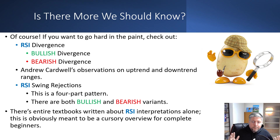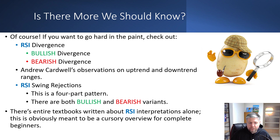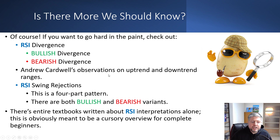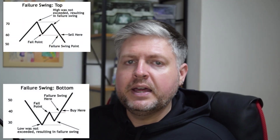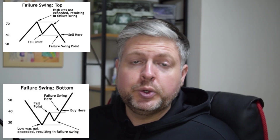There's a ton more you should know, but I'm not going to cover it in this video. There are textbooks on RSI, so if you want to go hard in the paint, go get some of those textbooks — start with Wilder's 1978 book and go from there. Some main points I'd suggest: specifically look at RSI divergence, look at Andrew Cardwell's observations on uptrend and downtrend ranges in bull and bear markets, and take a look at RSI swing rejections — they're a four-stage pattern that's really hard to identify but very strong to include in your TA.